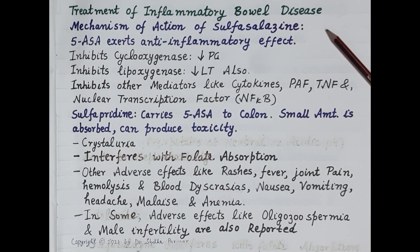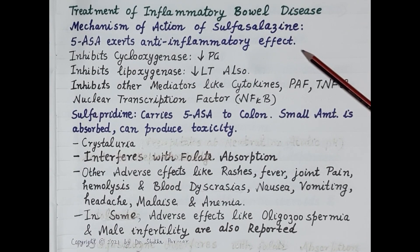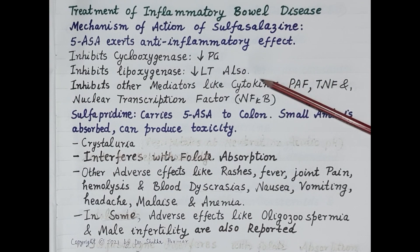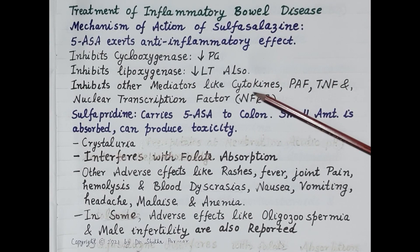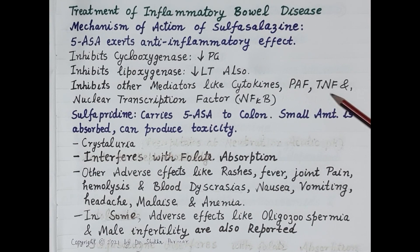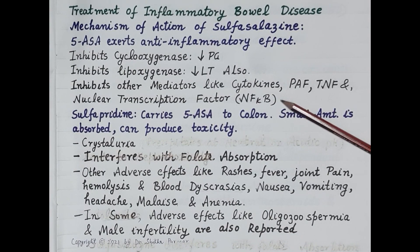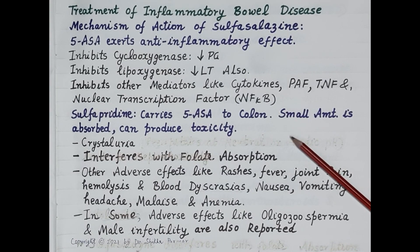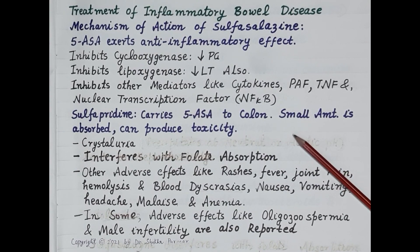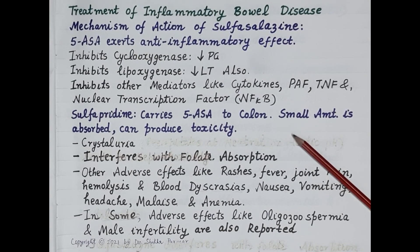Regarding the mechanism of action, 5-aminosalicylic acid exerts anti-inflammatory effect by inhibiting the enzymes cyclooxygenase and lipoxygenase. Inhibition of prostaglandins, leukotrienes, and other mediators and cytokines — such as platelet activating factor, tumor necrosis factor, and nuclear transcription factor — is responsible for its anti-inflammatory effect. Sulfapyridine is mainly responsible for transporting 5-aminosalicylic acid to the colon; small amounts absorbed in the colon are responsible for toxicity, and in around 20 to 30 percent of patients, treatment is discontinued due to adverse effects.